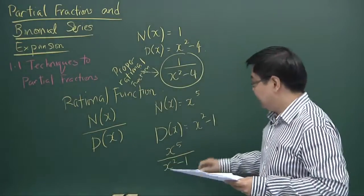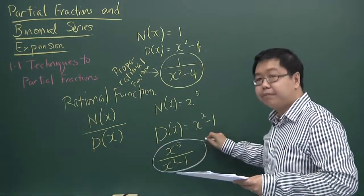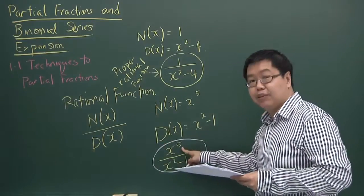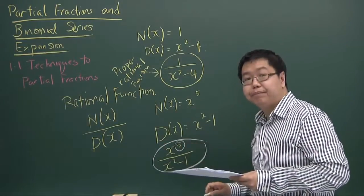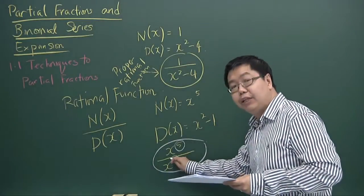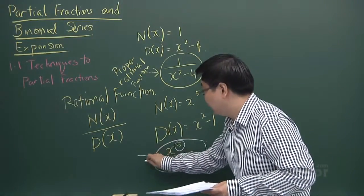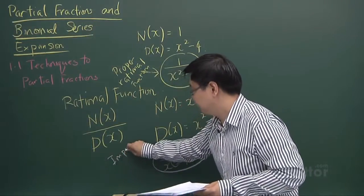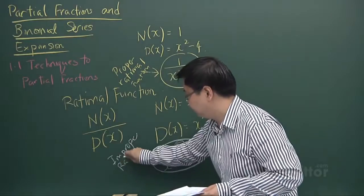For the second case, our numerator is x to the power of 5 whose degree is 5, whereas for the denominator the degree is only 2. We call such a rational function an improper rational function.